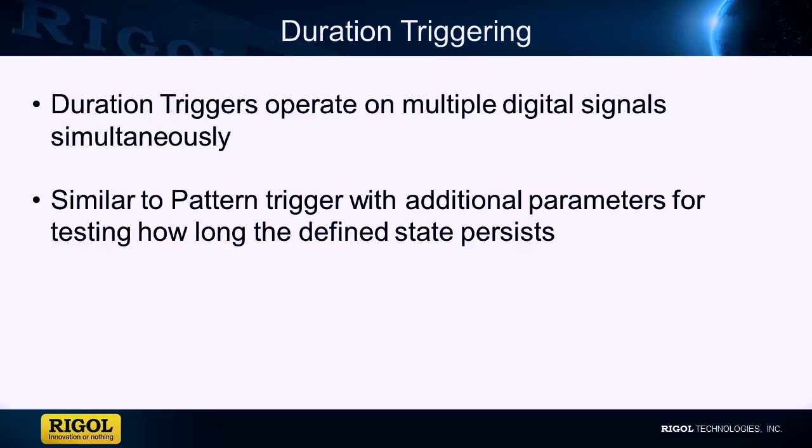A duration trigger adds the capability to test for how long that combination of states occurs. In units of time, you can select a lower limit, an upper limit, or activate both to catch only states that last between the two time values.